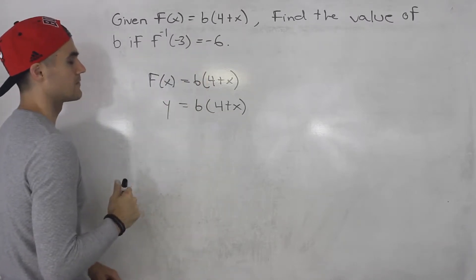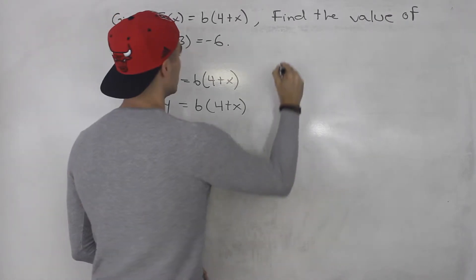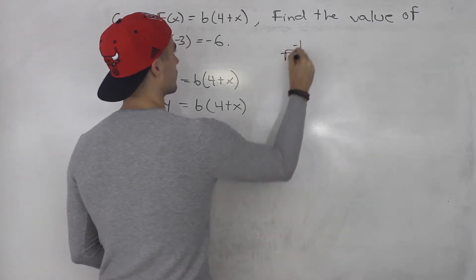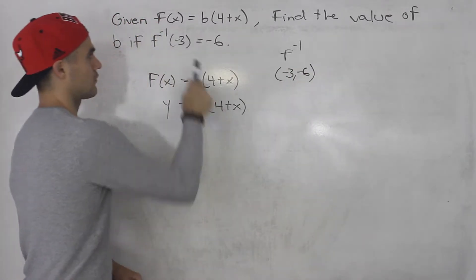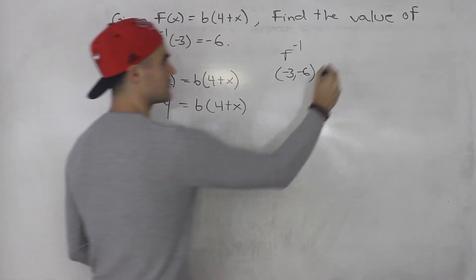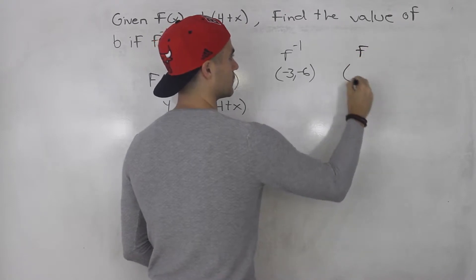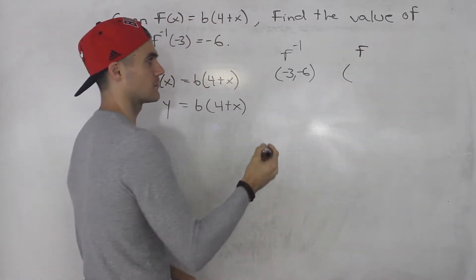That's one way to do it. In my opinion though, we know that the inverse has this coordinate, (-3, -6). So that means the function, what's the coordinate on the function going to be?